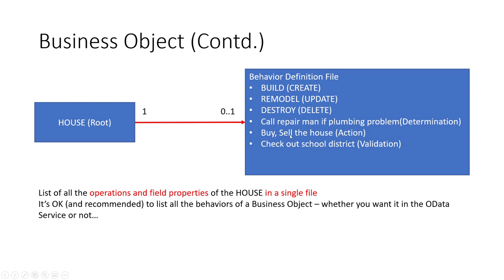You can also buy or sell the house — these don't fall under create, update, or delete, so these are marked as actions. In the OData world, actions are represented as function imports. You can also do validation — certain fields can have certain values. All of the behaviors this business object has should be listed one by one in the definition file. There is a strict one-to-one mapping: one business object, one definition file.